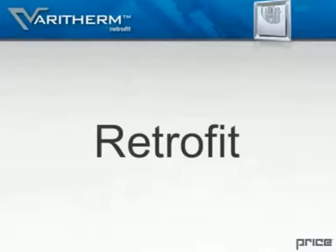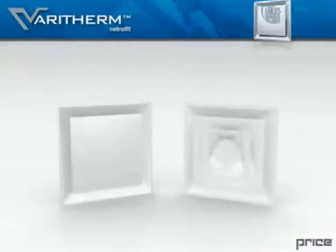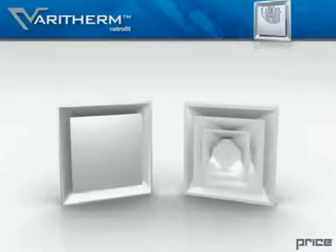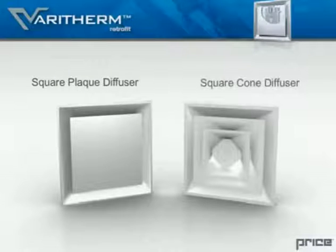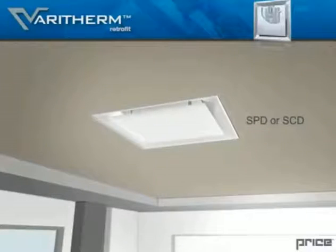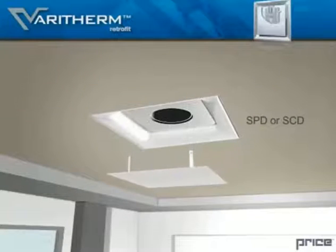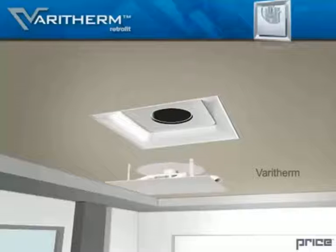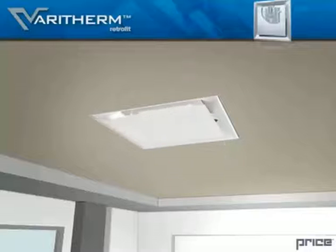Retrofit: To help with trouble zones, the Varitherm is also available as a retrofit of our popular square plaque diffuser or square cone diffuser found in buildings across the continent. The Varitherm control module simply replaces the SPD or SCD core without the need to replace the back pan.